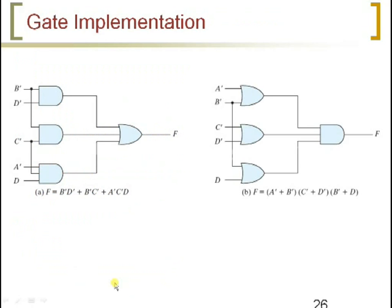Let us see in detail with one more example. I have taken two functions here: one is sum of products and the other is product of sums. As we have three min terms, these min terms are realized with AND gates. I have used three AND gates, and the outputs of these three AND gates are summed, so I have used one OR gate.